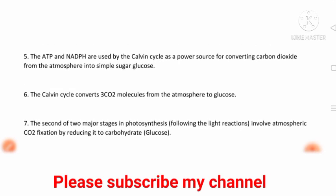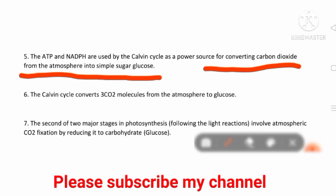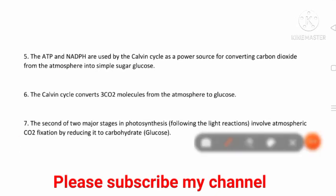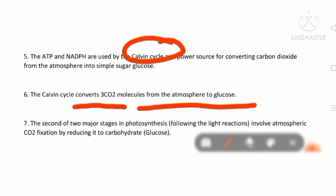Step five: ATP and NADPH are used by the Calvin cycle as a power source for converting carbon dioxide from the atmosphere into simple sugar. These energy-rich compounds ATP and NADPH drive the breakdown of CO2 into simple sugar through the Calvin cycle. The Calvin cycle converts three carbon dioxide molecules from the atmosphere into glucose.